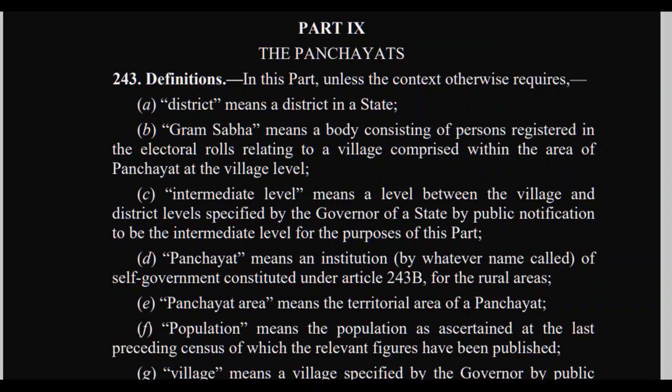Which part of our Indian constitution envisages a three-tier system for panchayats? It is Part 9. Part 9 of our Indian constitution envisages, means proposes, a three-tier system of panchayats — that is village level, district panchayat, and intermediate panchayat.